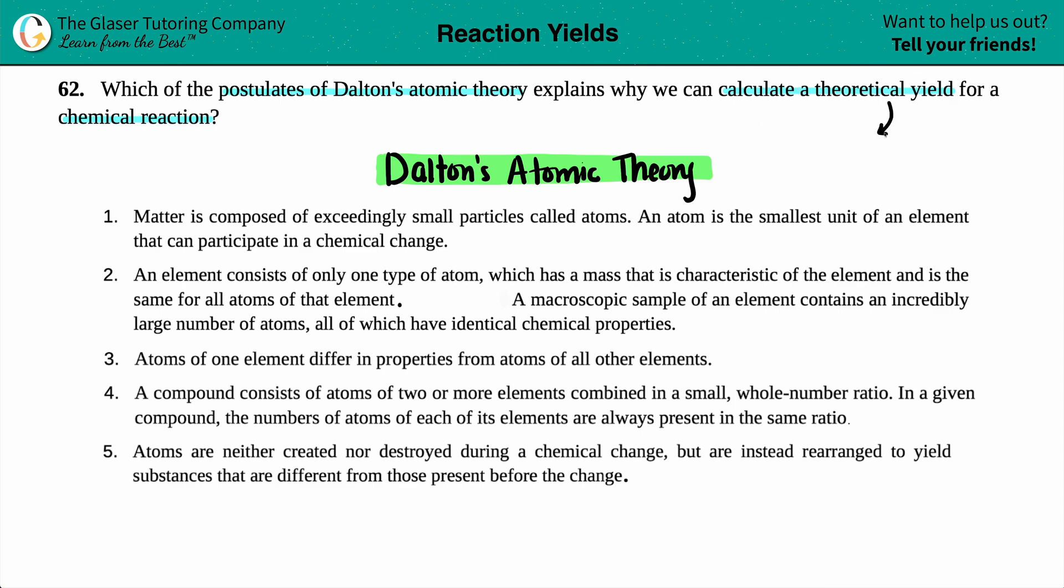Just know that a theoretical yield is always your calculated amount of a product. A theoretical yield is in theory, it's not actual. It's in theory if there were no errors in life and no mistakes, what would be the maximum amount of product that we could make from a chemical reaction?